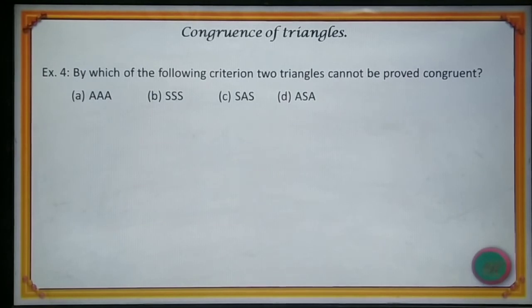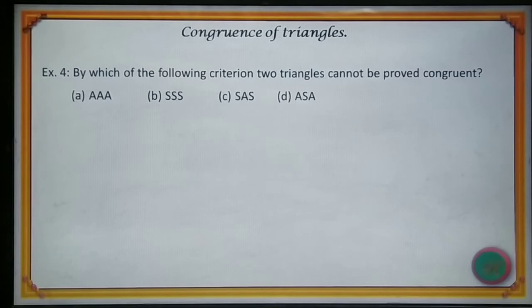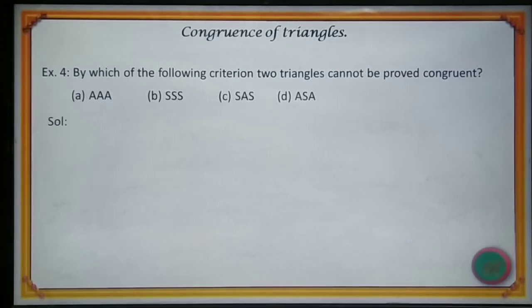Example 4. By which of the following criteria can two triangles not be proved congruent? The correct option is D.